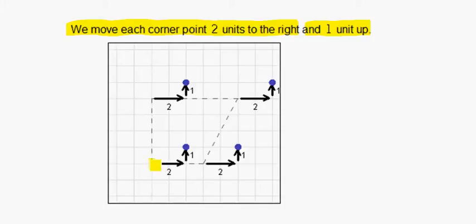So every point started here, and we're going two right and one up for every point. Two right, one up. Two right, one up.